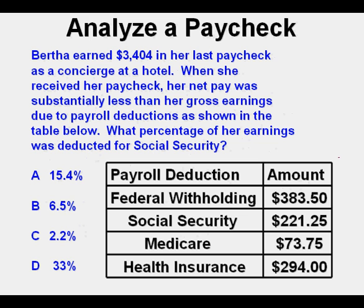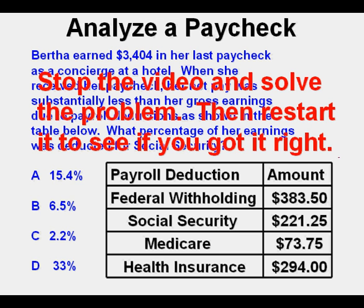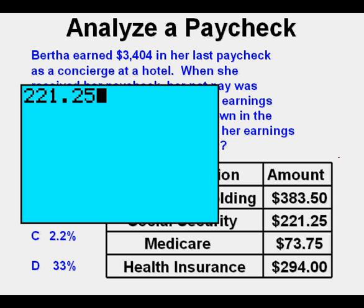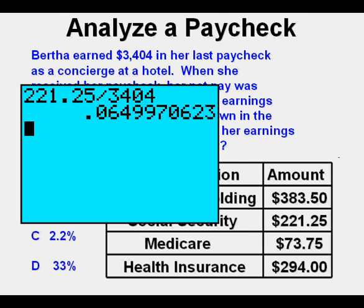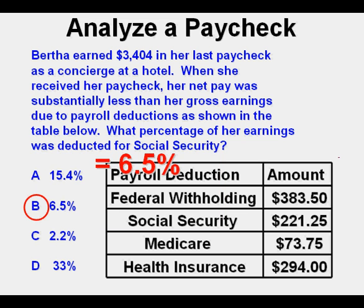Let's look at this problem. Bertha earned $3,404 in her last paycheck as a concierge at a hotel. When she received her paycheck her net pay was substantially less than her gross earnings due to payroll deductions as shown in the table. What percentage of her earnings was deducted for Social Security? Take the Social Security deduction amount, $221.25, and put it in your calculator. Then divide by the total earnings, $3,404. Press enter — we get .065, which is 6.5%, and that's answer choice B.